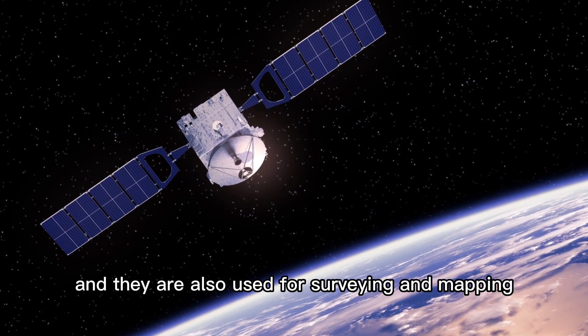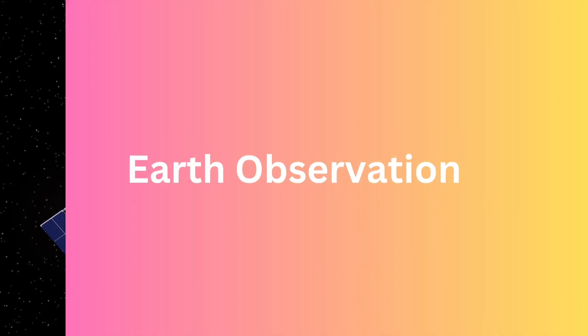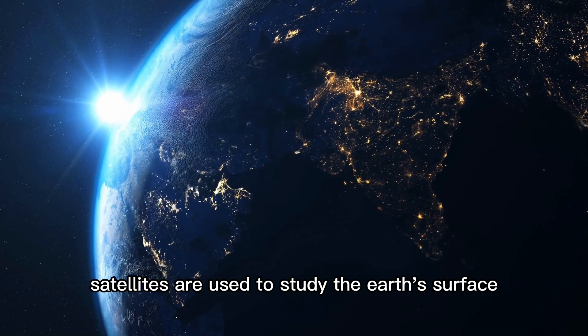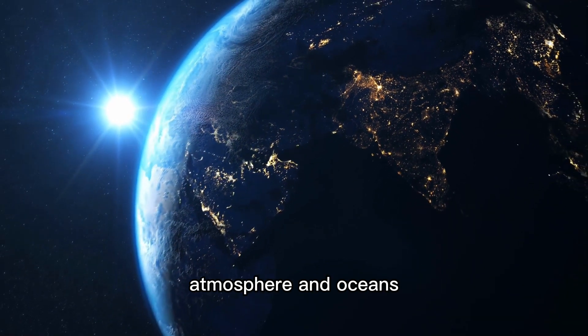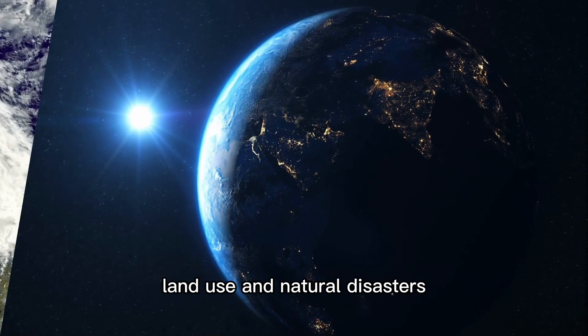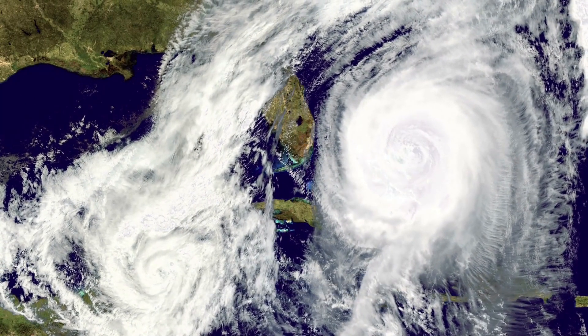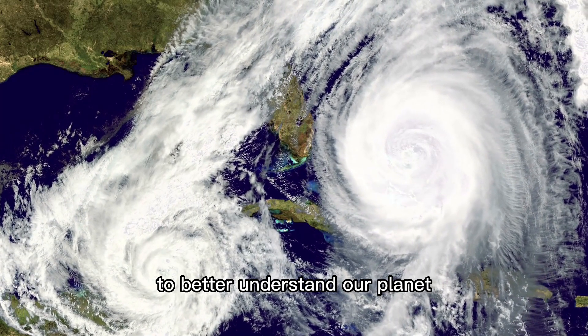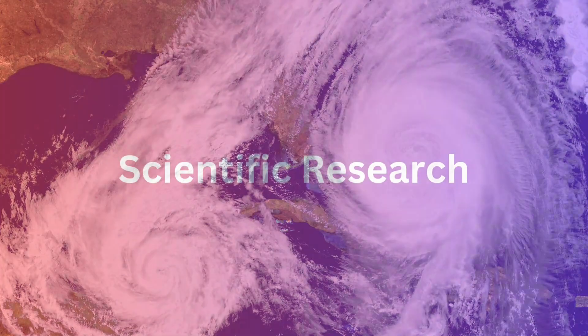Earth observation satellites are used to study the Earth's surface, atmosphere, and oceans. They can be used to monitor things like weather patterns, land use, and natural disasters, and they are often used by scientists and researchers to better understand our planet.